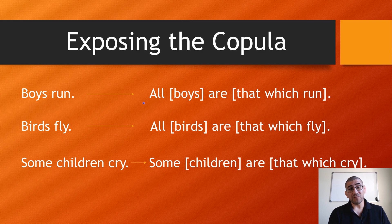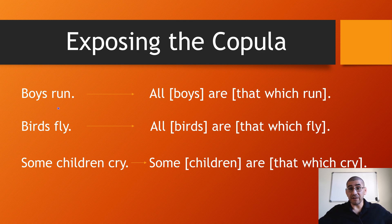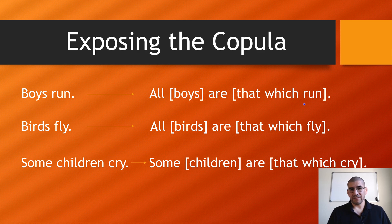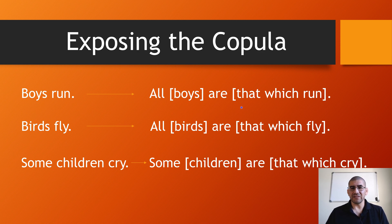For 'boys run,' we say 'all boys are that which run.' Notice there's no copula visible — it's hidden, implied. It's our job when putting something in logical form to expose it. We add the relative pronoun 'that which' to turn the predicate into a relative clause: 'all boys are that which run.' It's a little uncomfortable at first, but after you do it a few times, it starts to get easier and habitual.